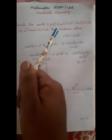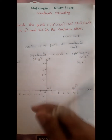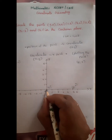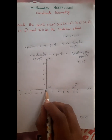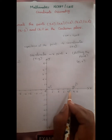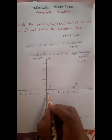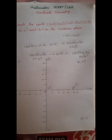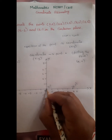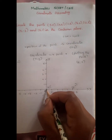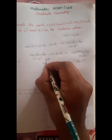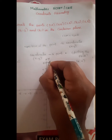Next is (0,5). Here x equals 0 and y equals 5, so y-axis is equal to 5. Since x is 0, the point lies on the y-axis. Therefore x equals 0 and y equals 5 gives us the point (0,5).